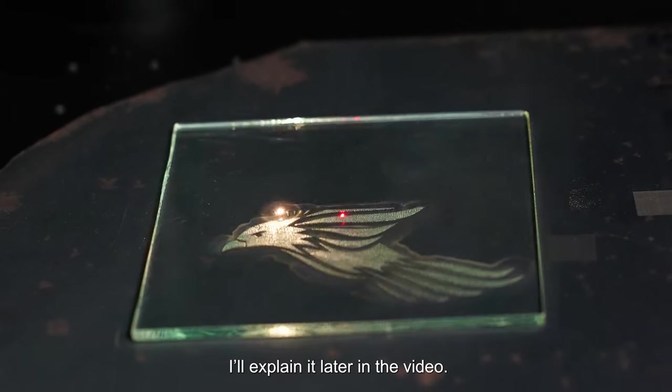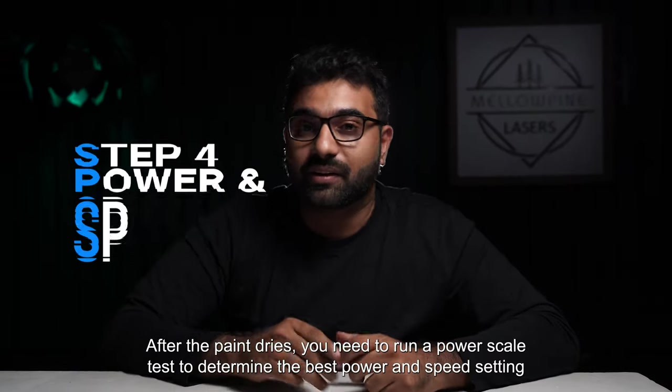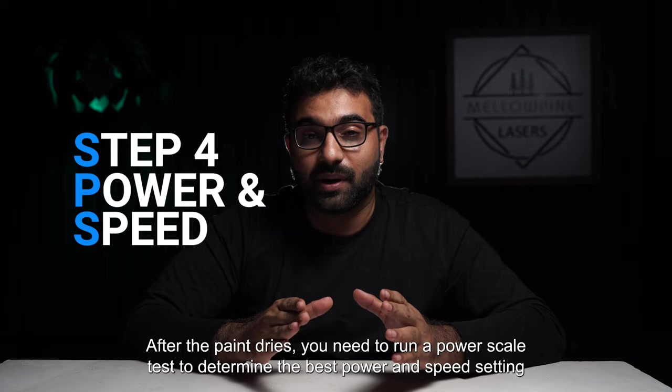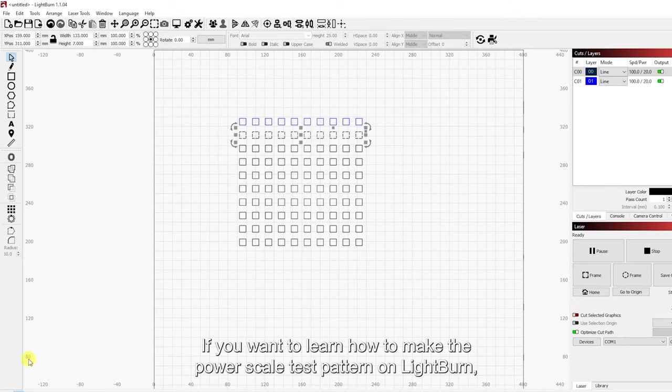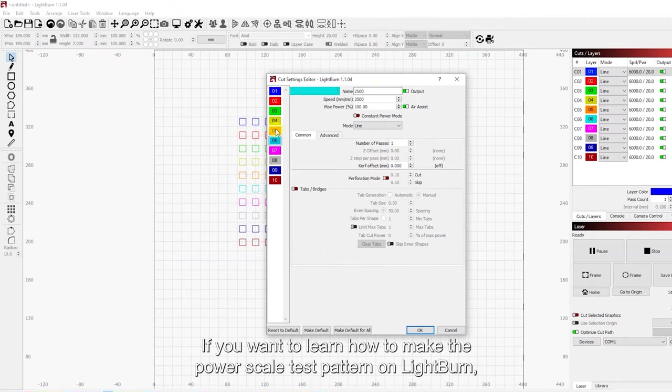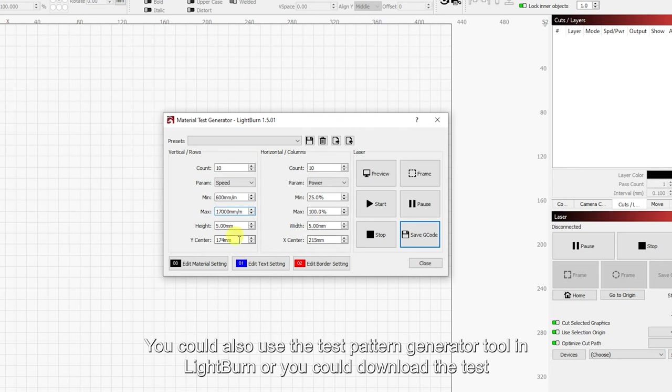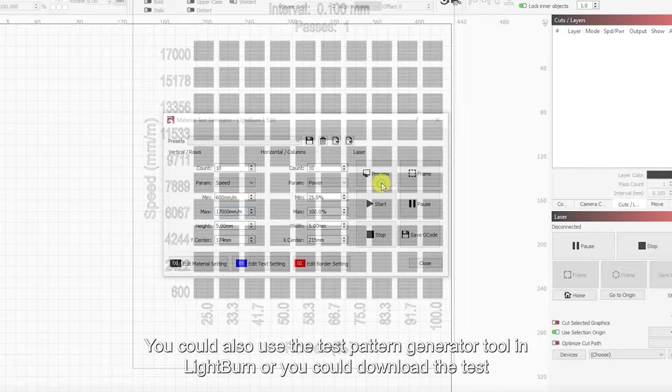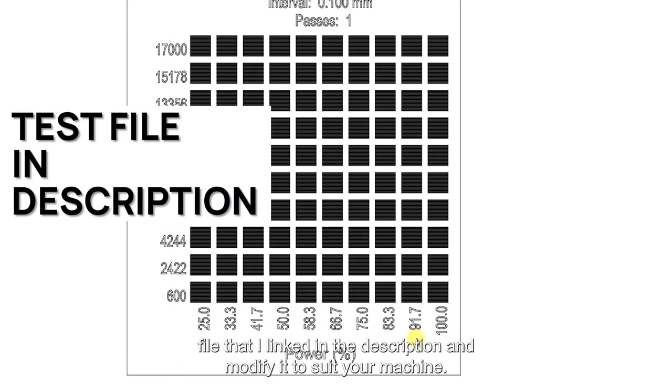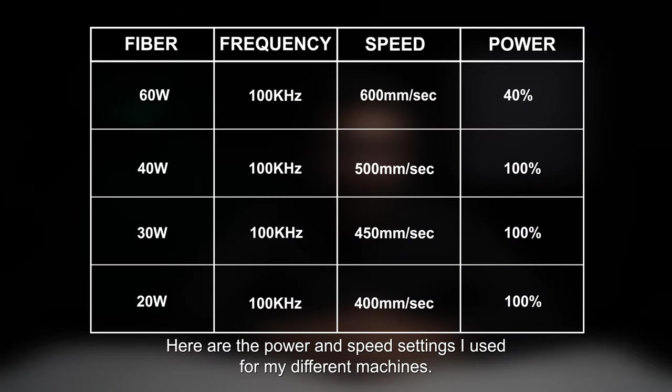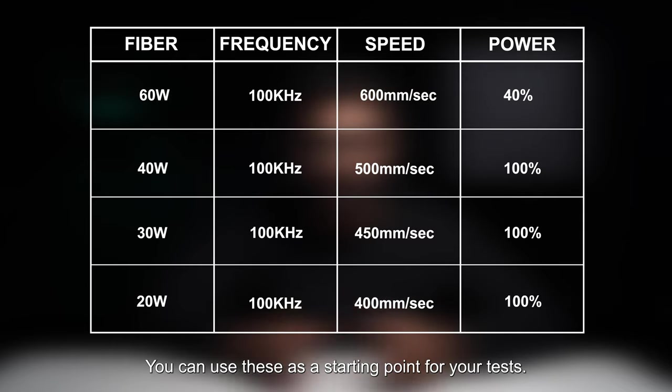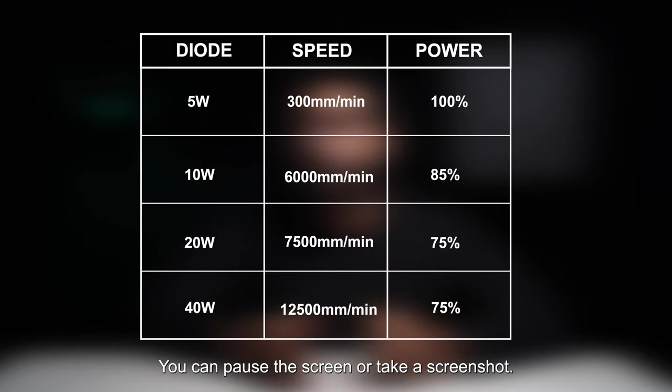After the paint dries, you need to run a power scale test to determine the best speed and power setting for your laser. If you want to learn how to make the power scale test pattern on LightBurn, I have a video on it. I'll link it in the description. You could also use the test pattern generator tool in LightBurn, or you could download the test file that I linked in the description and modify it to suit your machine. Here are the speed and power settings I used for my different machines. You can use these as a starting point for your test. You can pause the screen or take a screenshot.